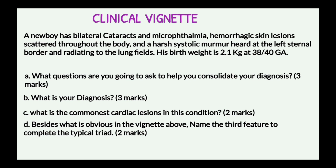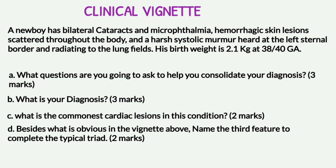Questions to ask the mother include: any maternal immunization history, the number of weeks of pregnancy when maternal exposure to Rubella occurred, evidence of maternal Rubella infection, and evidence of intrauterine growth retardation during pregnancy. The diagnosis is Congenital Rubella Syndrome. The most common cardiac lesion is patent ductus arteriosus. The third feature of the classic triad is sensorineural deafness.